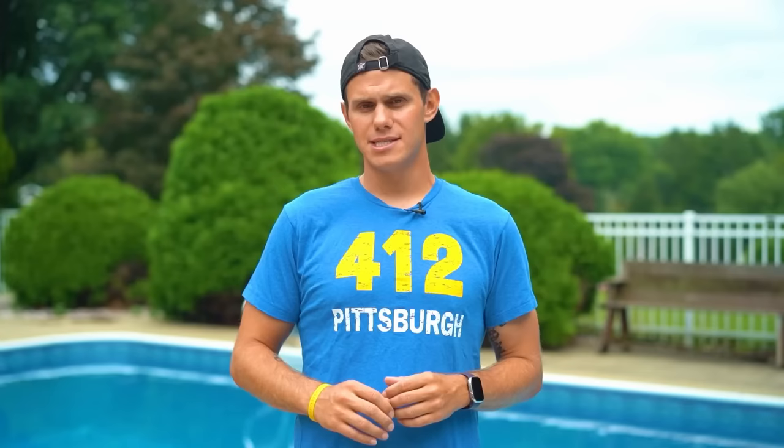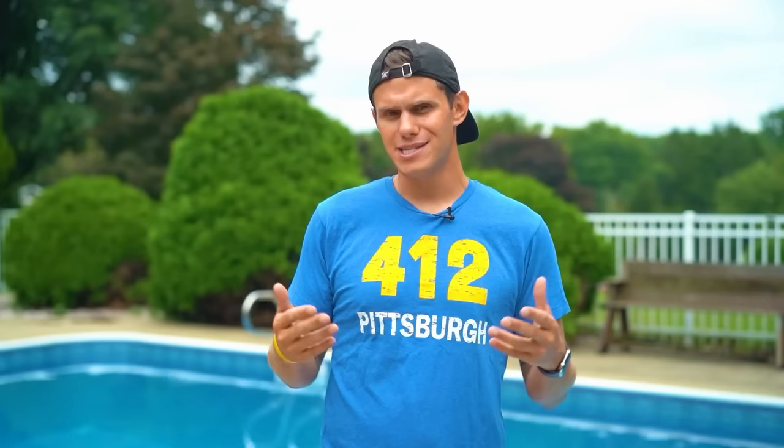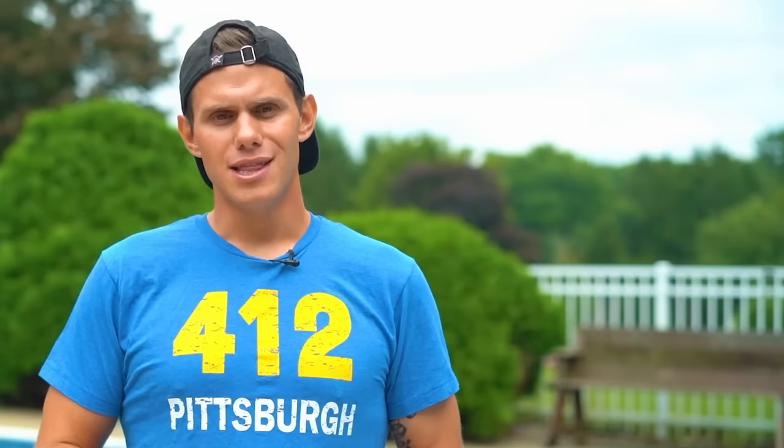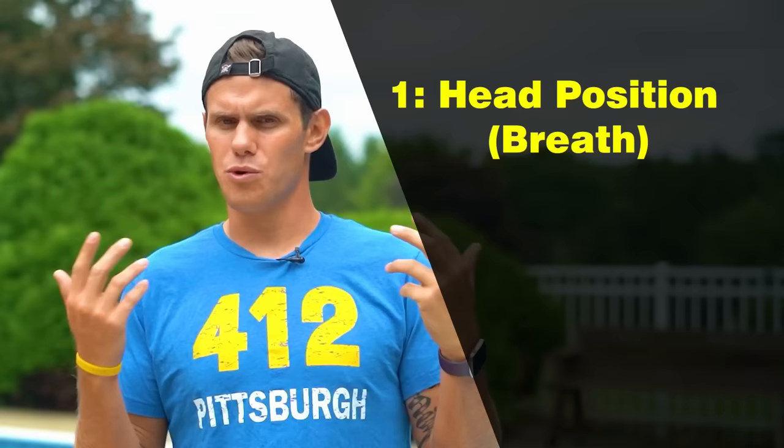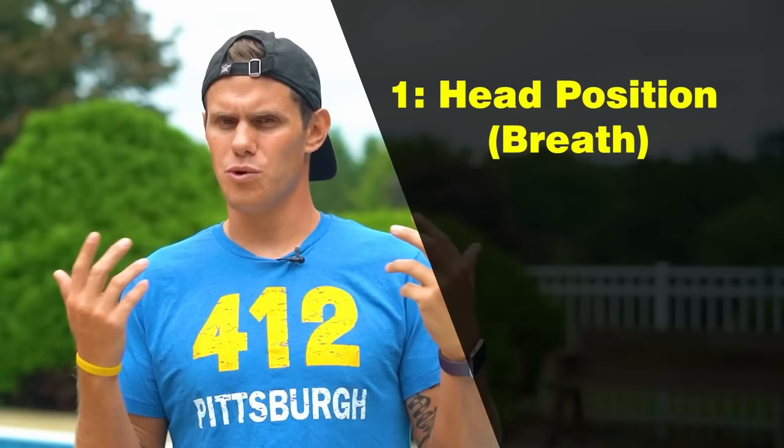The modern term today is freestyle; the competitive swimming term is freestyle. Technically in a freestyle swimming event you're allowed to dive in and swim any stroke you want, but it has to remain the same stroke for the whole race. So if you had a 100 freestyle race and dove in and swam butterfly, you'd have to keep swimming butterfly the whole race — that's what the word freestyle means. Like every stroke, freestyle has three components: the head position or breath, the arms, and the legs or kick.